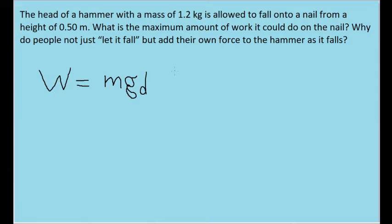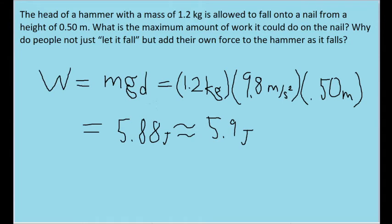Now let's plug in the mass of the hammer, the acceleration due to gravity, which is 9.8 meters per second squared, and the height from which the hammer is falling. Plugging these values into our calculator, we find a work of about 5.88 Joules, or, if we round to two significant figures, about 5.9 Joules.